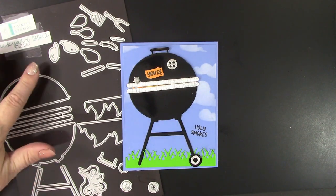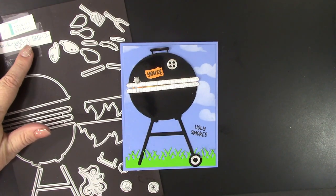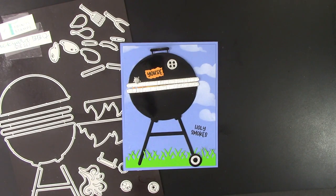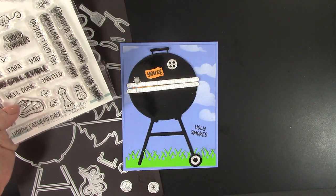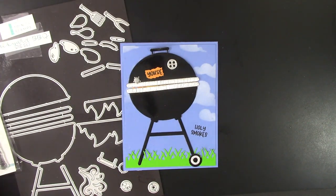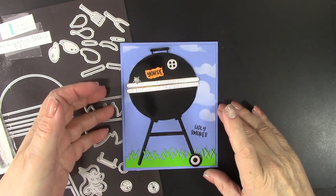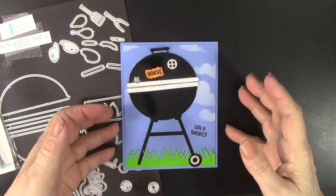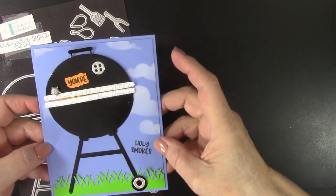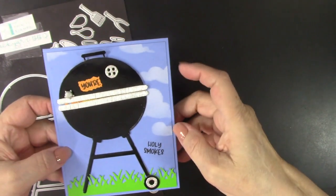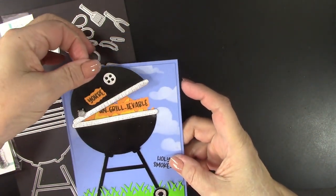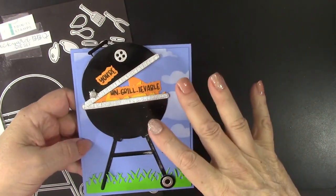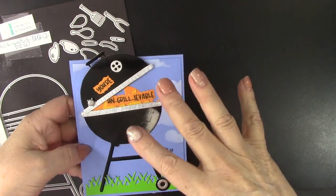I ordered the Backyard BBQ Die Set and the Ungrillivable Stamp Set. This is the first card that I made. See? Isn't that cute with that barbecue grill and the sentiments? And then see how this opens to reveal a really funny sentiment under there from that stamp set?